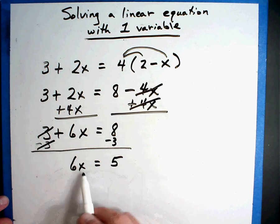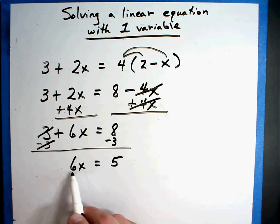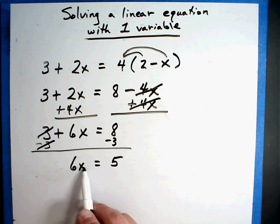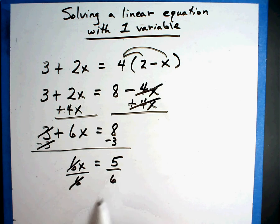And I want to solve just for X. So I got to get rid of the 6. That's 6 times X. So do the opposite, divided by 6. Answer X equals 5 over 6.